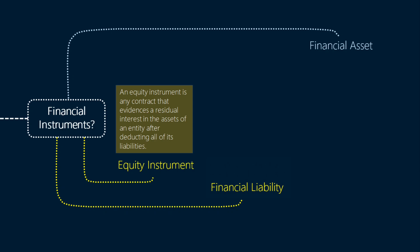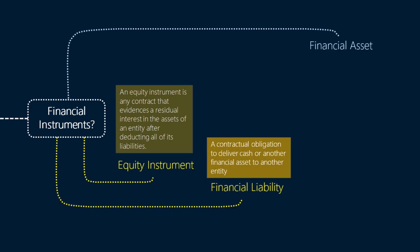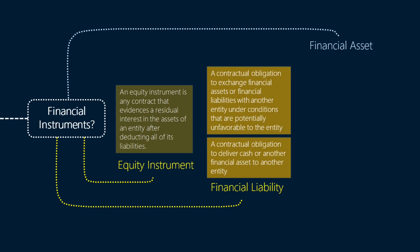And this takes us to a financial liability. A financial liability is any liability that is a contractual obligation to deliver cash or another financial asset to another entity — meaning it is simply an outflow of cash or other financial asset — or to exchange financial assets or financial liabilities with another entity under conditions that are potentially unfavorable to the entity, which means it is simply a net outflow of cash or other financial assets resulting from the exchange. In any case, a liability is a contract which results in a net outflow of cash or other financial assets.